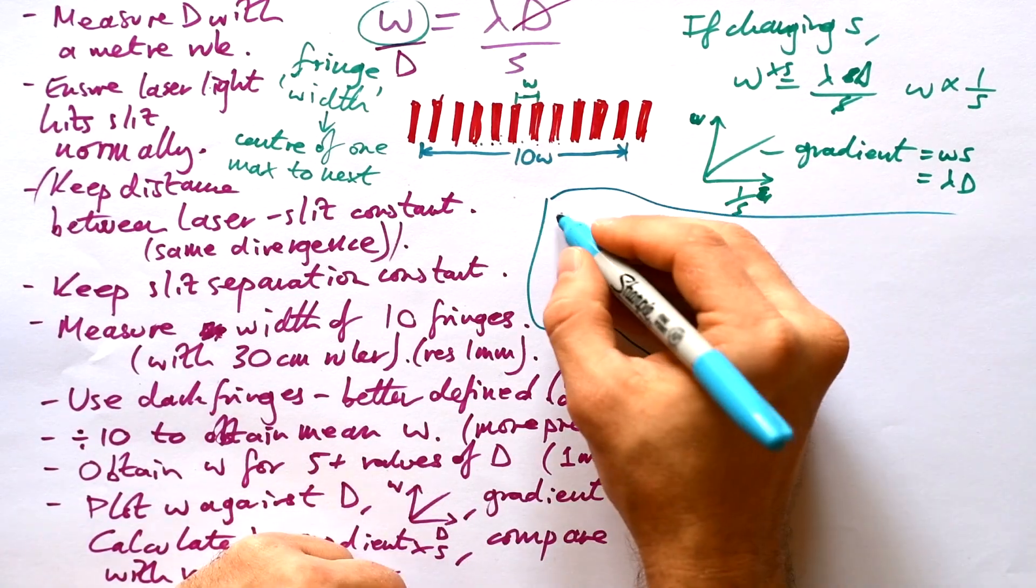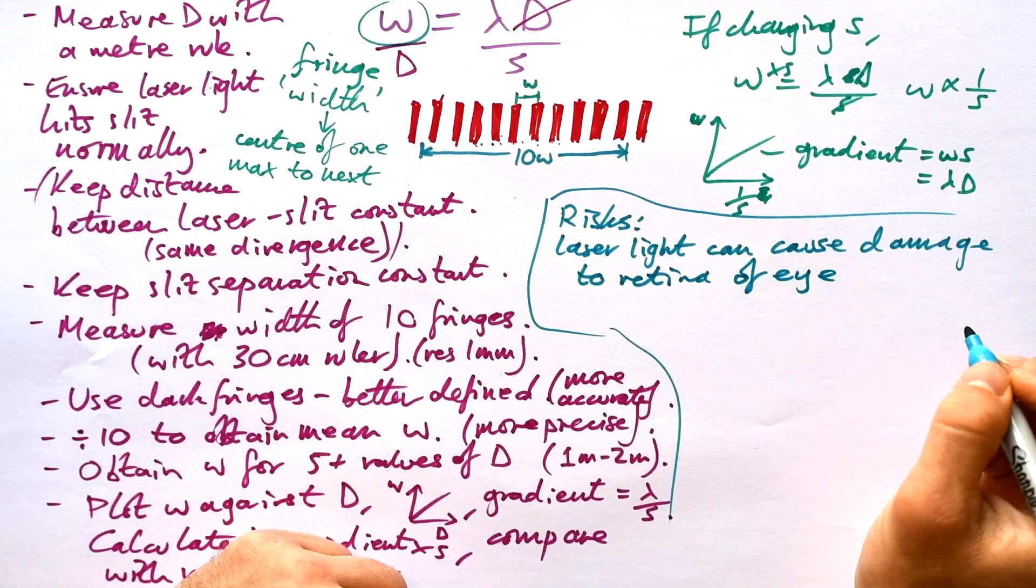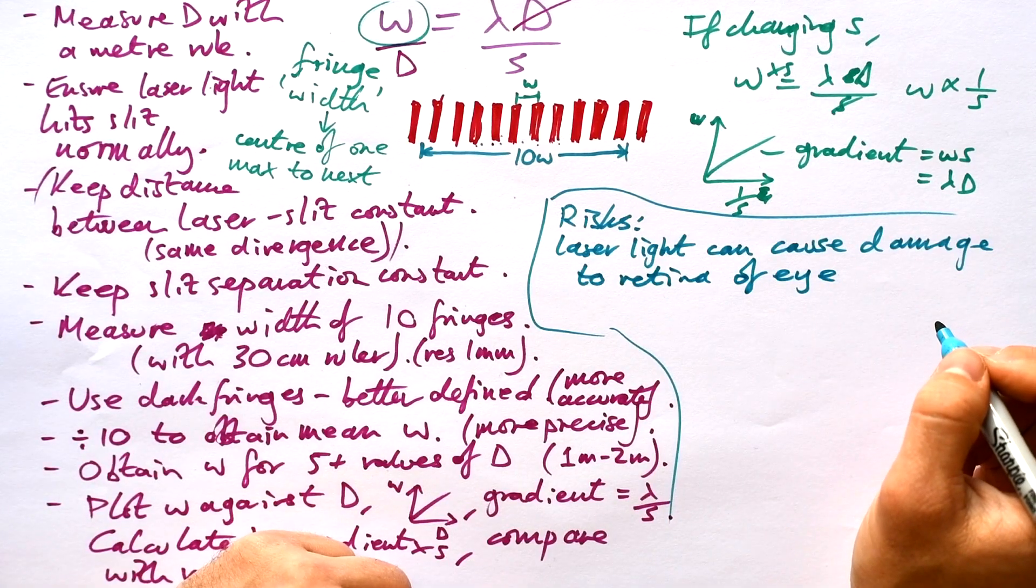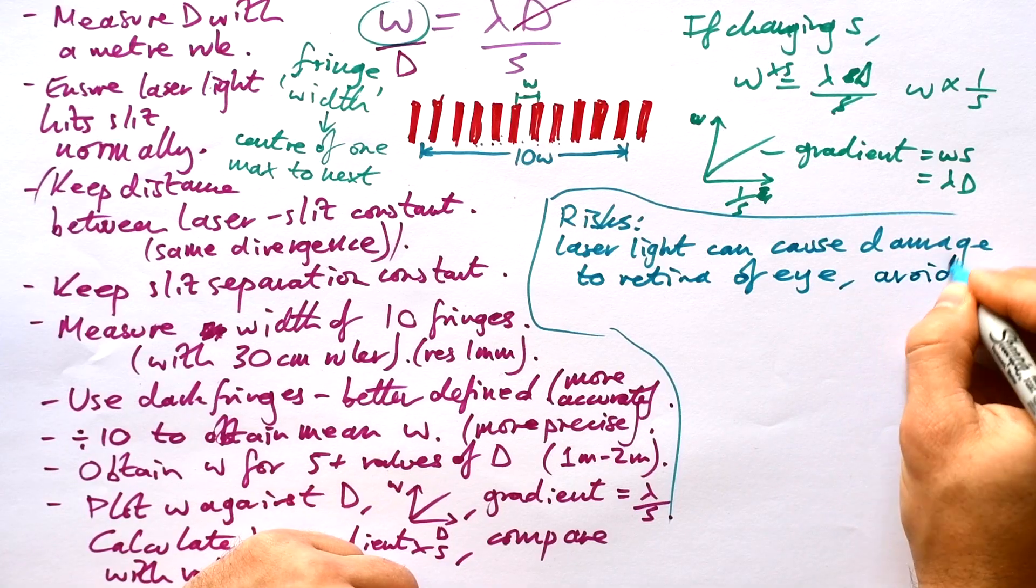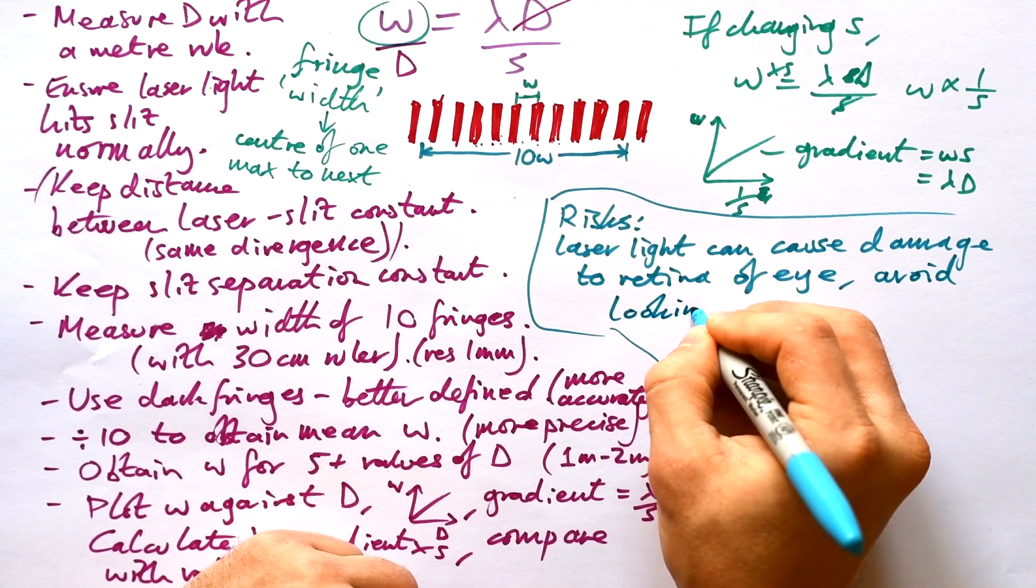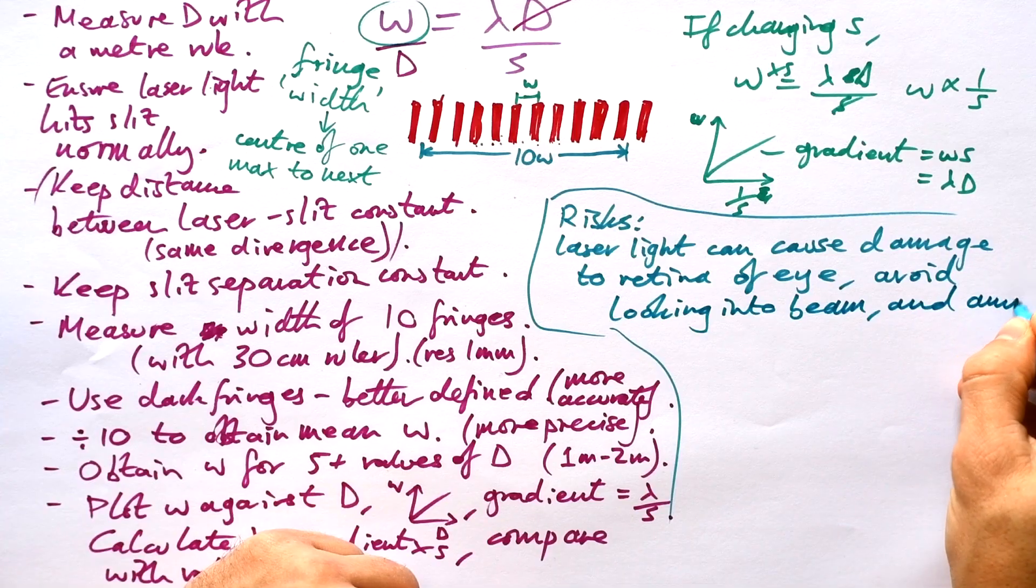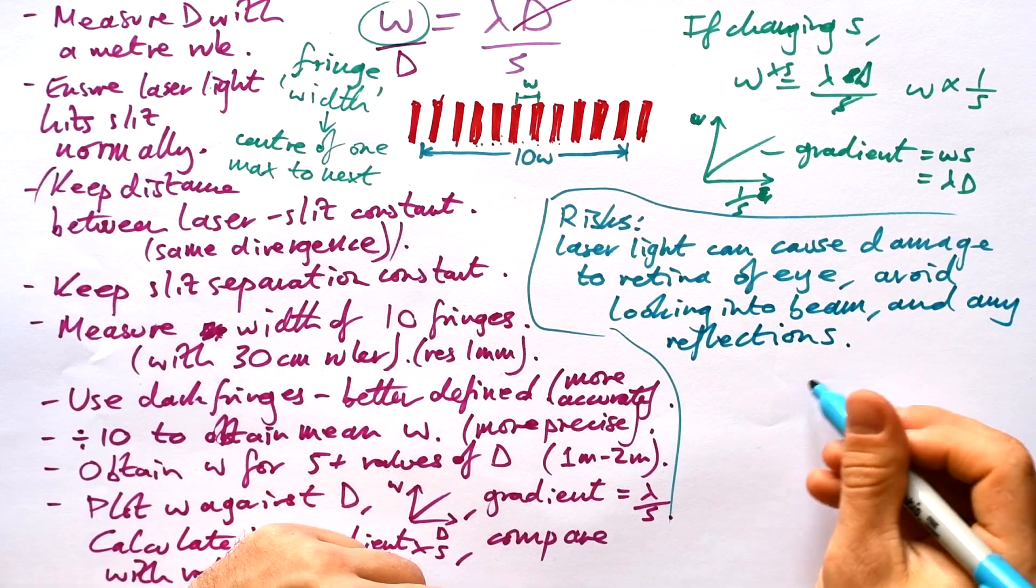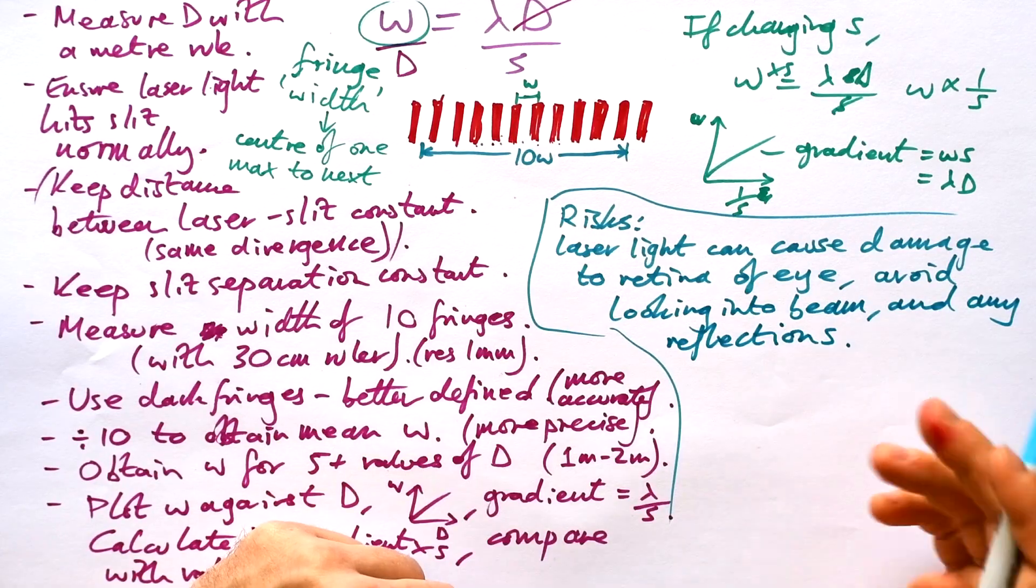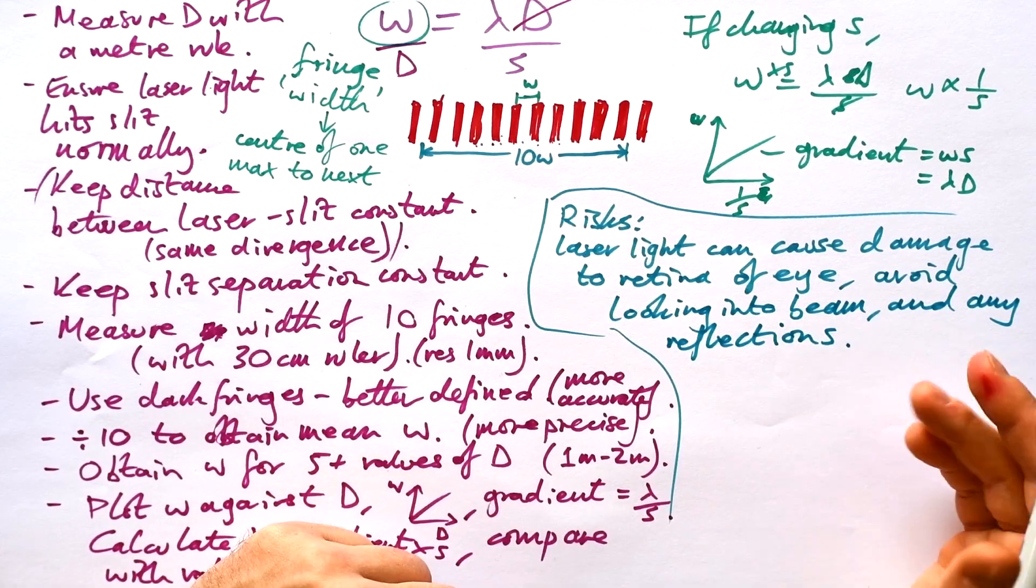A couple of risks you need to be aware of. Laser light can cause damage to the retina of your eye. So you must avoid looking directly into beam and any regular reflections. If laser light hits a piece of paper then you can see it. You can see it at any angle which shows that the laser light is being scattered in every single direction.